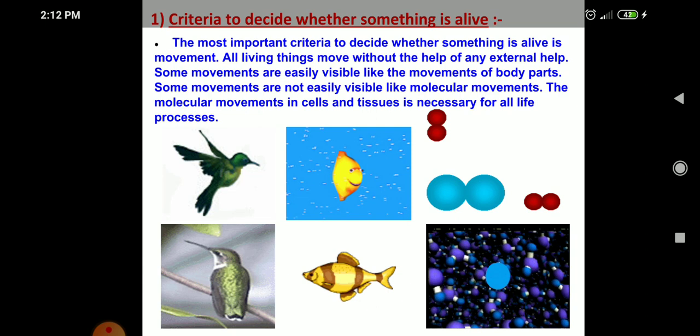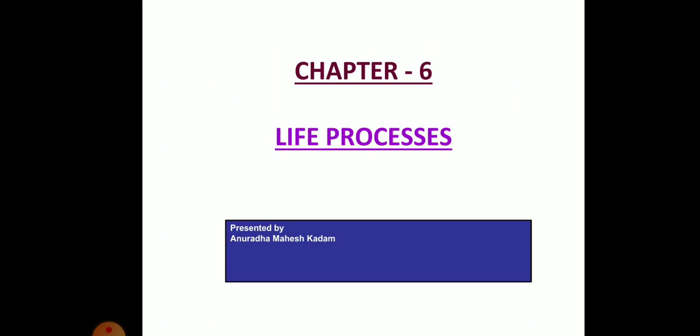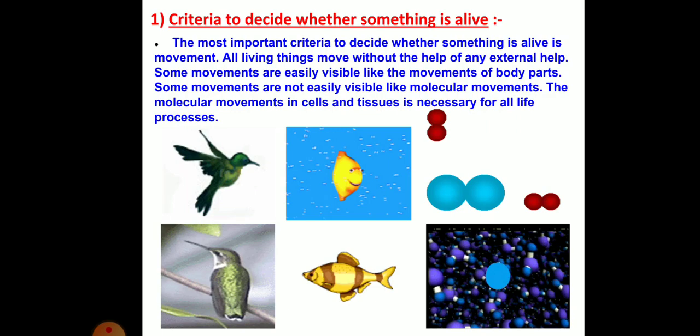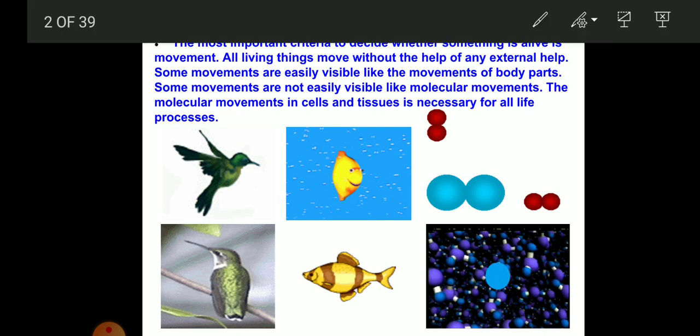First we need to see to whom we can say a living thing. The most important criteria to decide whether something is living or not is movement — living things move without the help of any external help.